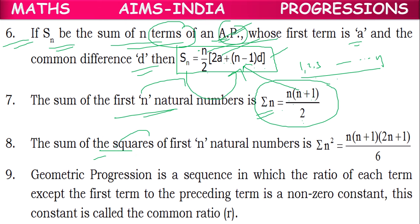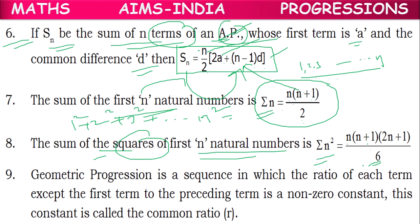The sum of squares of the first n natural numbers — that is, 1² + 2² + 3² + … + n² — is given by sigma n² = n(n+1)(2n+1)/6. These values we need to remember.